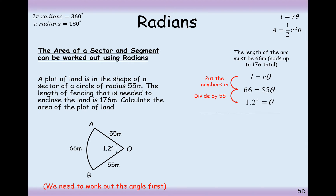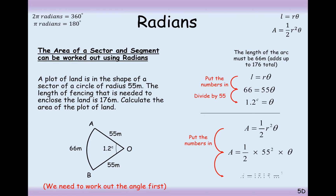Now that we know that this angle is 1.2 radians, we can work out the area by using the half r squared theta formula. Substituting your numbers in, we get an answer of 1,815 metres squared. That's the area for this plot of land.